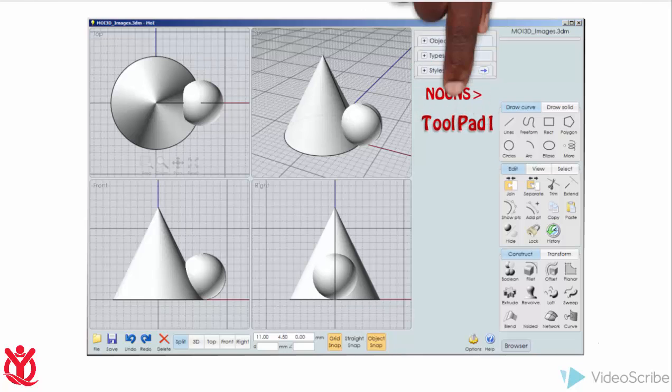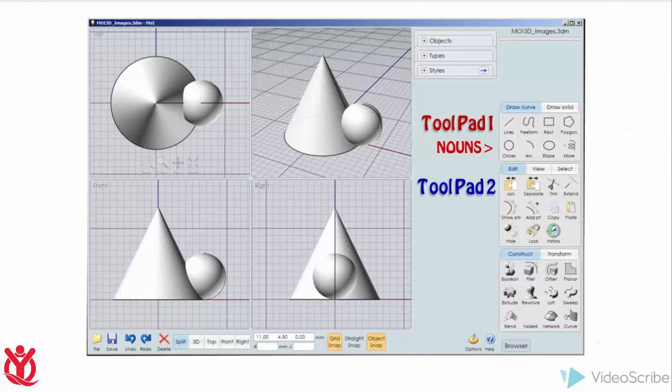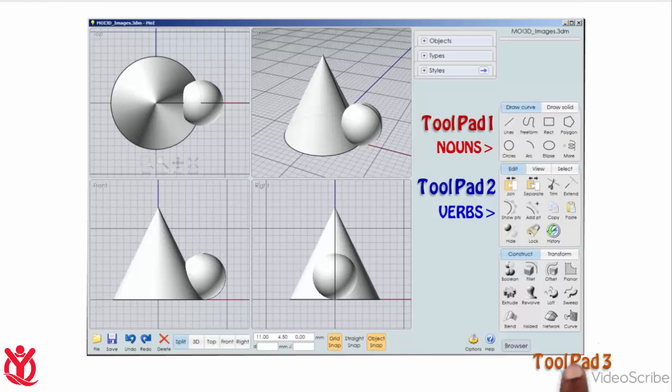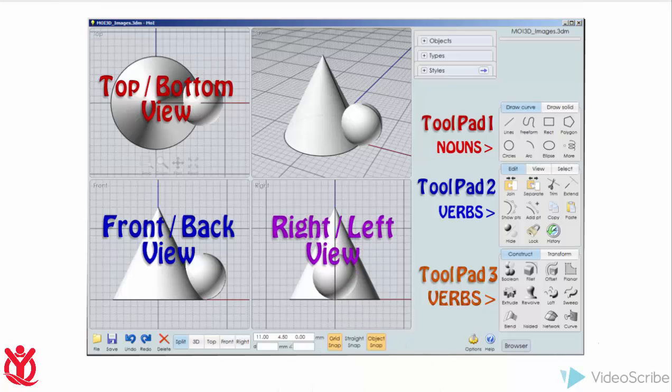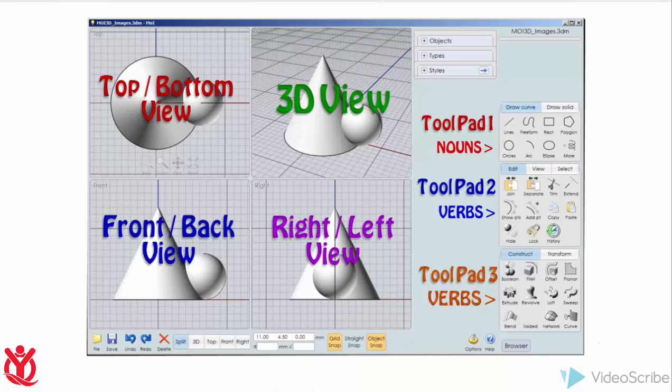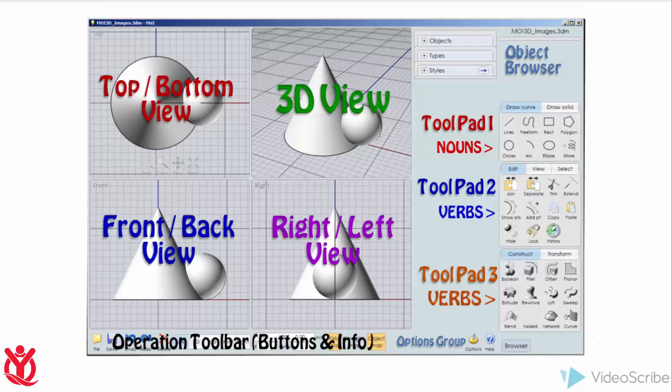Remember, Toolpad 1 allows us to create nouns like circle, rectangle and ellipse. Toolpad 2 contains verbs like copy and paste. Toolpad 3 contains the most important verbs like extrude and revolve. The top left window shows the top or bottom view. The bottom left window shows the front or back view. The bottom right window shows the right or left view. And the top right window shows the very important 3D view. The object browser is just to the right of the view window. And at the bottom right of the form, we have the options group toolbar. And finally, there is the operation toolbar, having control buttons and important information under the view window.